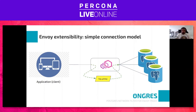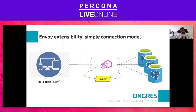On Envoy we have load balancing, health checking, outlier detection, and so on. Statistics are produced but are coarse at TCP level — for example, number of TCP connections, number of bytes passed over a TCP session, number of connection errors, and so on. Access logs are also limited to TCP sessions.